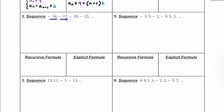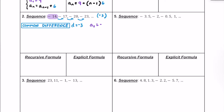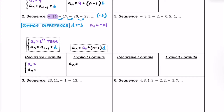For number 2, it looks like we have negative 14, then negative 17, negative 20, and negative 23. As each of these progress, it looks like we're getting smaller and smaller. Checking the common difference, I'm seeing a pattern of minus 3 each time. The first number in our sequence, a sub 1, is equal to negative 14. So d is equal to negative 3, and a sub 1 equals negative 14. For the recursive formula, a sub 1 is negative 14, and a sub n equals a sub n minus 1 plus the common difference, which is negative 3 — or we can just write minus 3 instead.